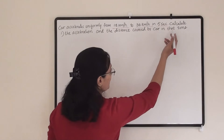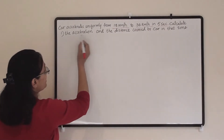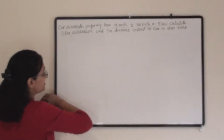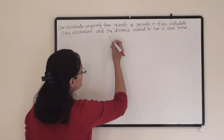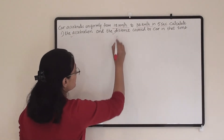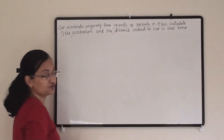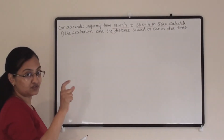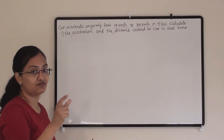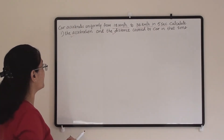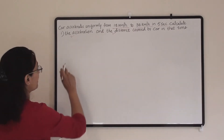5 seconds is the time. Now what do we have to calculate? We have to calculate the acceleration during this period, and also the distance covered by the car in that 5-second time — so that distance we have to find out. Let us note down all the details we have.